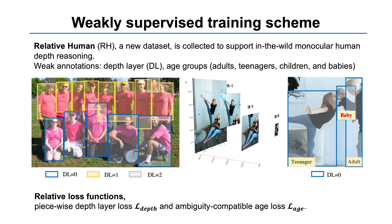To support in-the-wild monocular human depth reasoning, we collect a new dataset named Relative Human, or RH for short. We annotate the relative depth layer of people as well as their rough age group. For instance, the left image presents adults in three depth layers and the right image shows a teenager, baby, and adult in the same depth layer. Additionally, we also develop two novel loss functions to learn from these weak annotations.